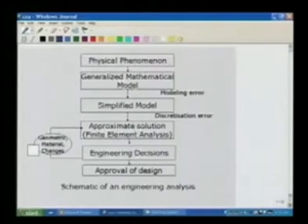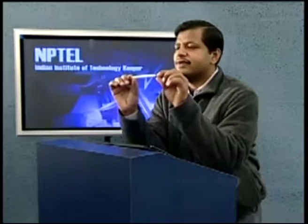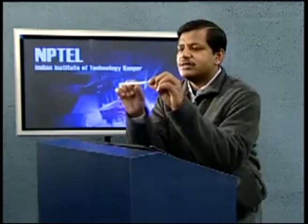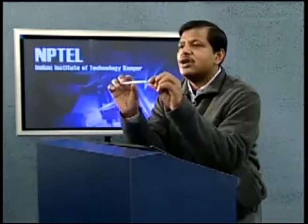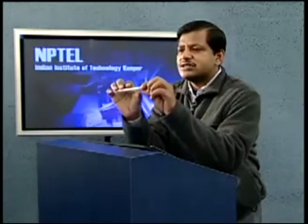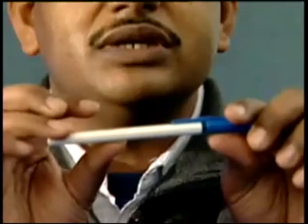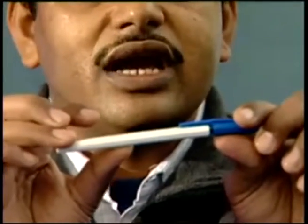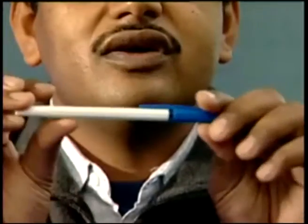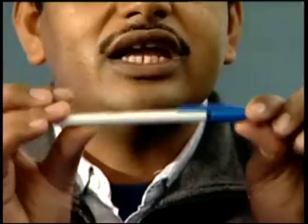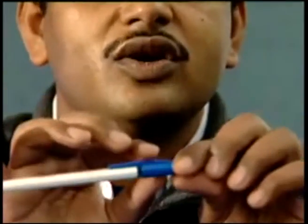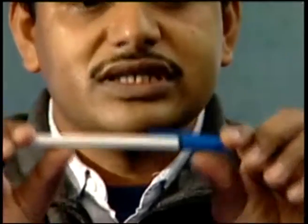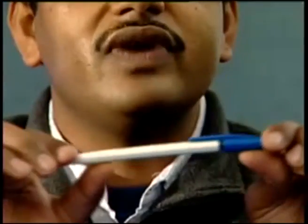For example, for this beam that is my pen, I may be interested in the tip deflection or I may be interested in knowing what is the stress distribution in the beam, so that I can decide whether the pen is going to fail at any point of interest. For example, in this case, the pen may fail at the root.